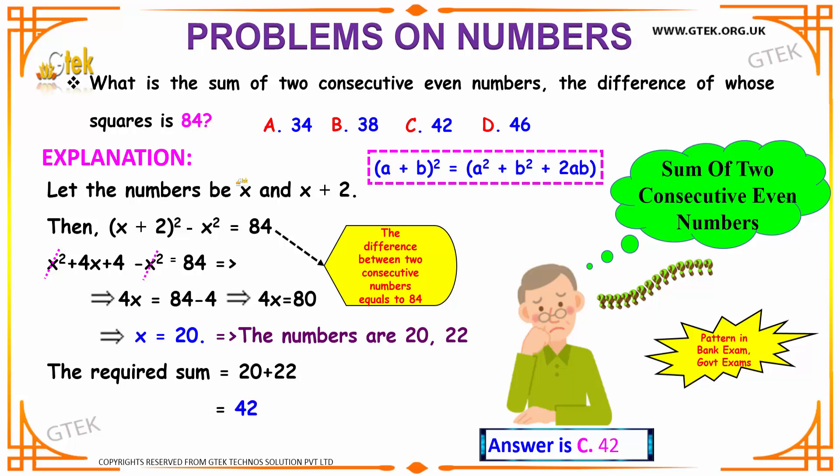We have two consecutive even numbers. Let us take our first number to be x and since it is a consecutive even number, our next number will be x plus 2. Hence, we have our first number to be x and the consecutive even number to be x plus 2.